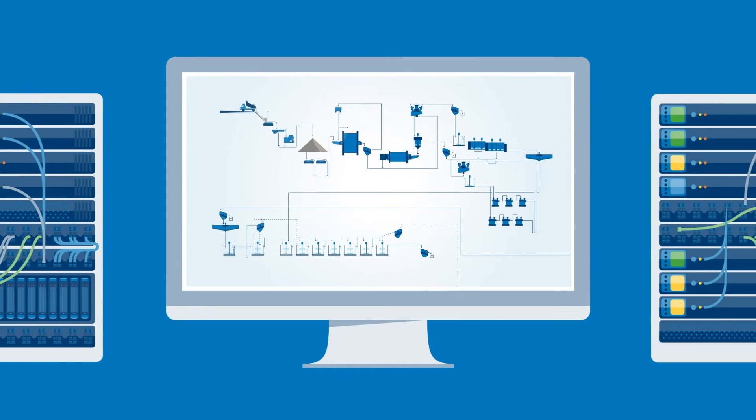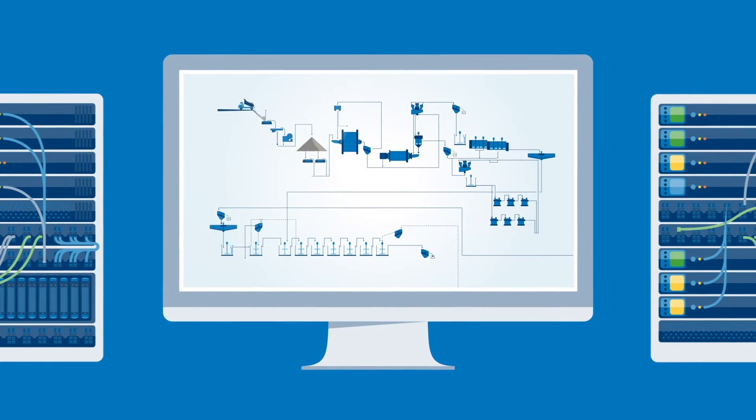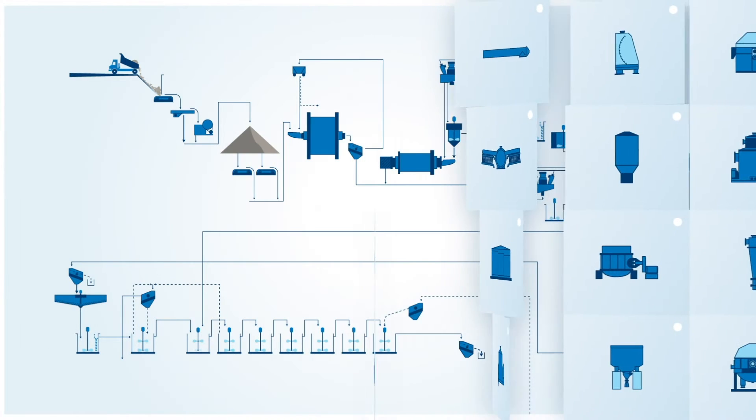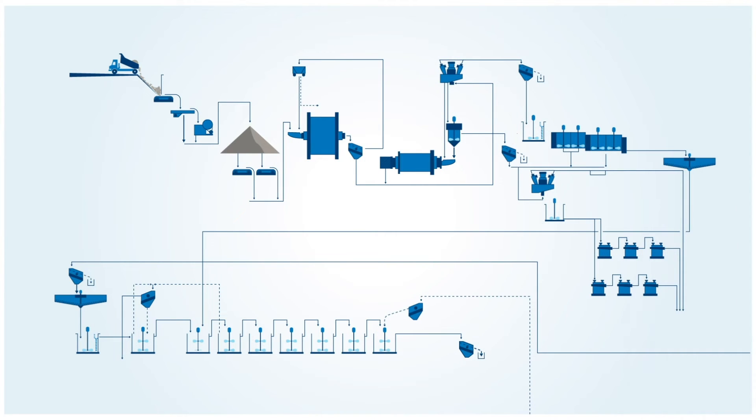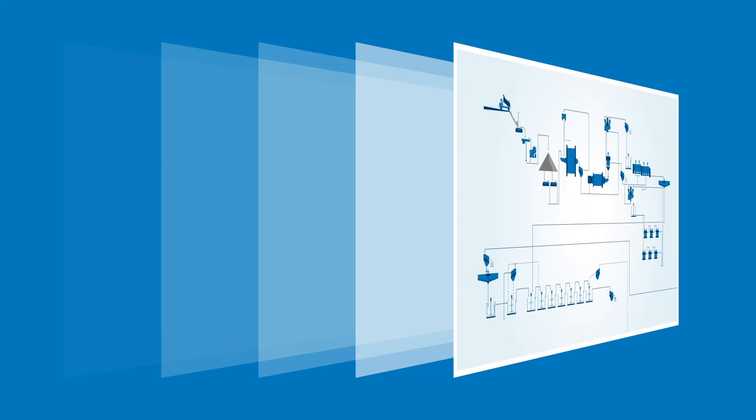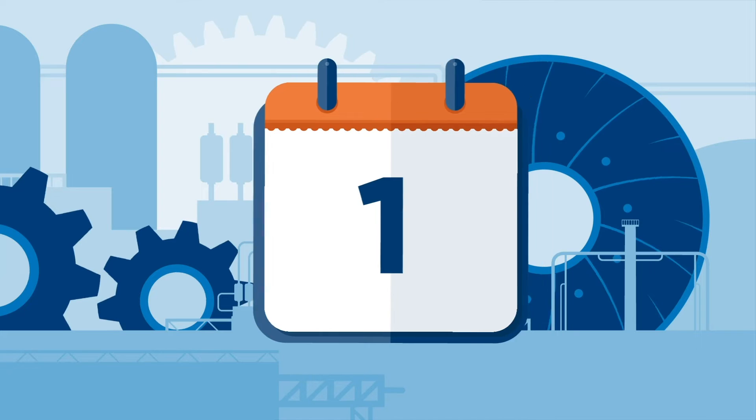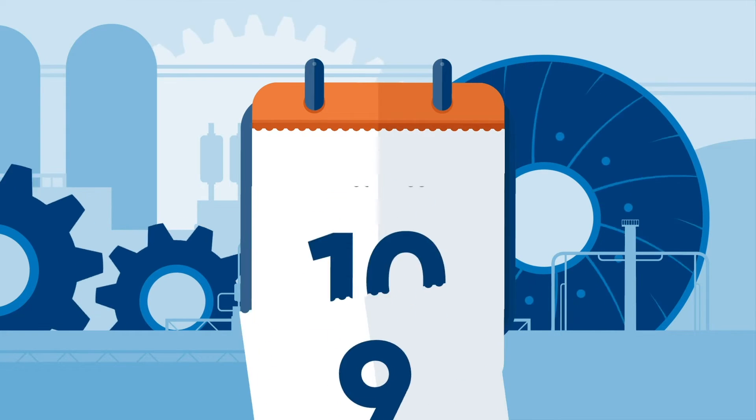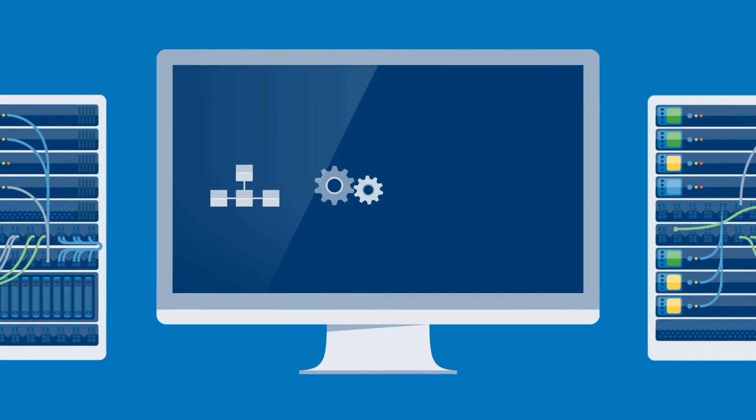We start by making a realistic model in a simulated environment of the process, and then once we have that model, we deploy it in a cloud environment and our machine learning algorithm spends months to years of simulated time exploring and learning every possible way that that system can fail.